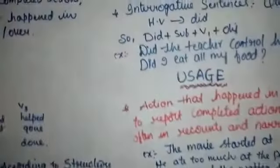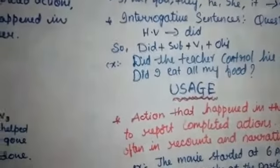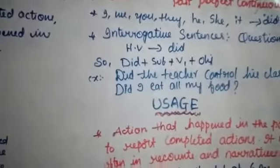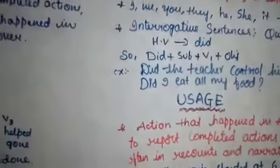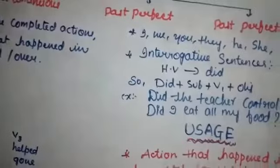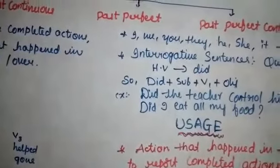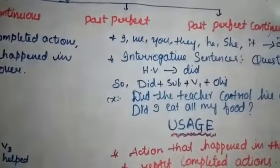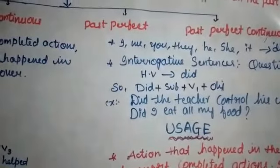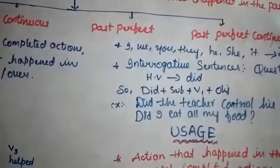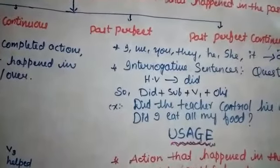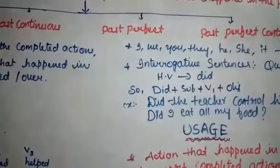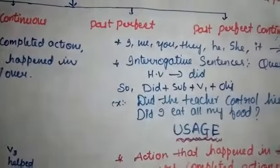Now, some hints to identify simple past tense. The keywords you can see in simple past sentences are: ago, long ago, back, long back, then, yesterday, last night, in 1947, in 1974, and similar expressions. All these are keywords to identify simple past tense, indicating the sentences belong to simple past — that is, V2.